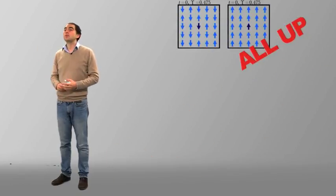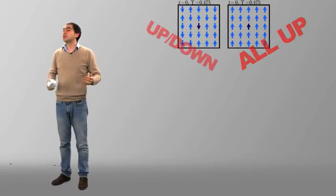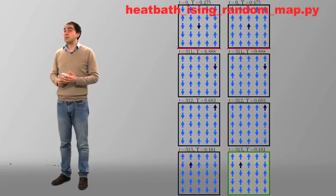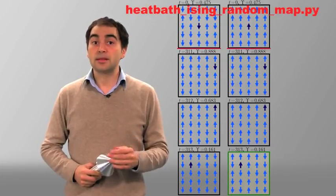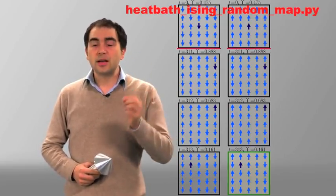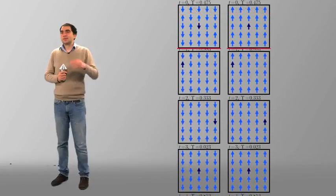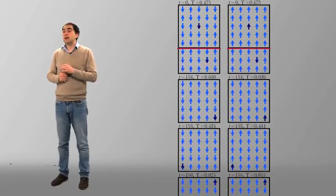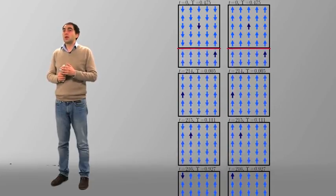So, to understand how coupling works, let's run again the program heatbath_ising_randommap.py, starting from two configurations, the all-up configuration on the right and the random initial configuration on the left. As it was already observed by Michael, the two copies just merged and coupled after a while. Just remember that at each time step, we have updated the same spin and used the same random number upsilon for both copies.